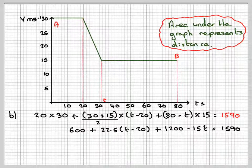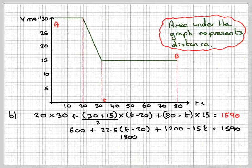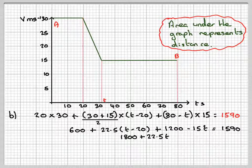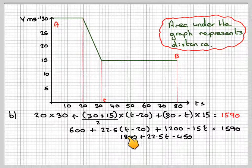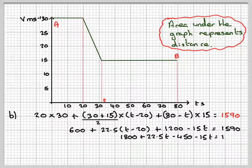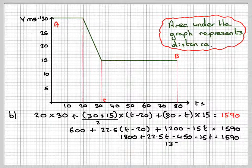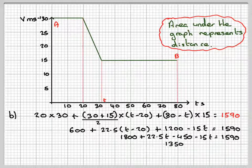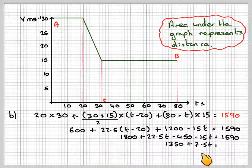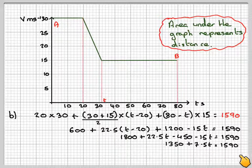600 plus 1200 is 1800. Multiplying this out, we're going to get plus 22.5T minus 450, 22.5 times 20 minus 15T is equal to 1590. 1800 minus 450 gives me 1350 plus 22.5T minus 15T gives me 7.5T is equal to 1590.